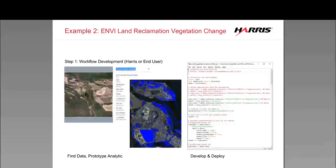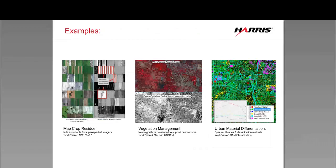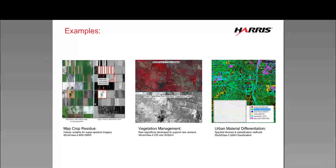Getting into a couple of other examples of the analytics that ENVY brings — really to understand the power of ENVY with DigitalGlobe data. On the far left, you see an image on the left side and an analytical product on the right to map crop residue. We ship and expose on the platform spectral indices to do things like this crop residue mapping. Right now we ship 67 different spectral indices, and spectral indices is one of the 153 analytics exposed on the platform.